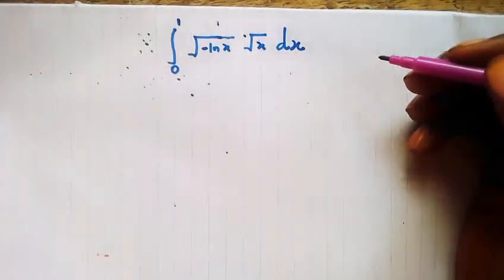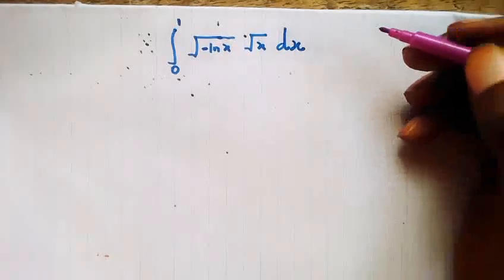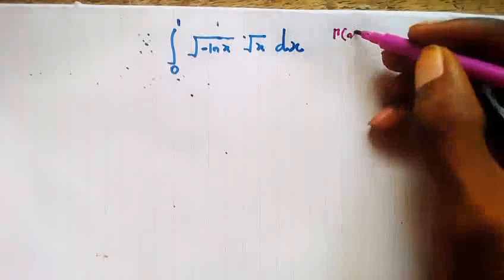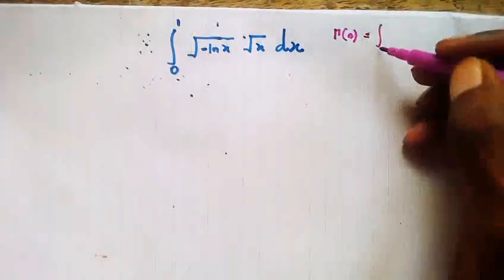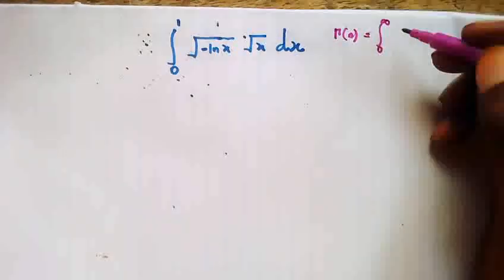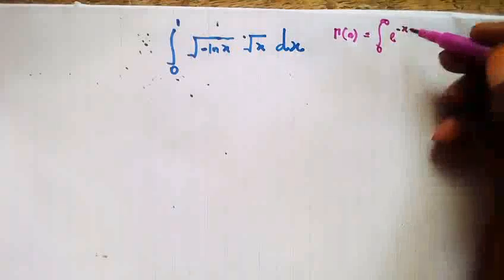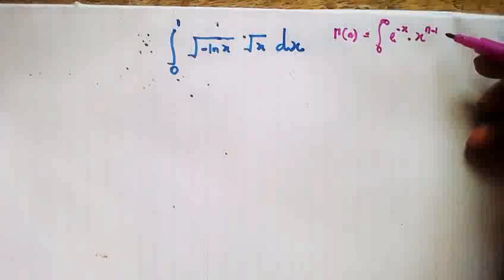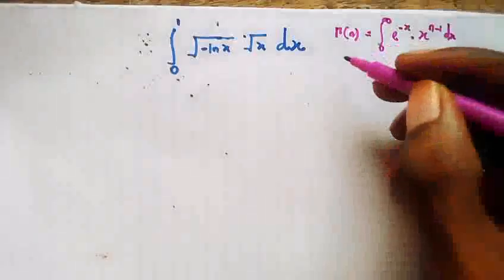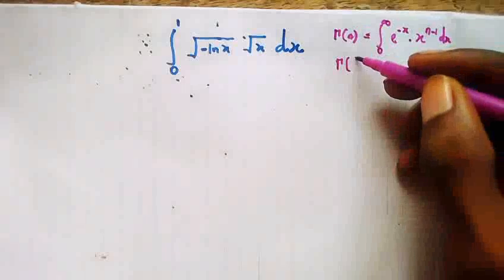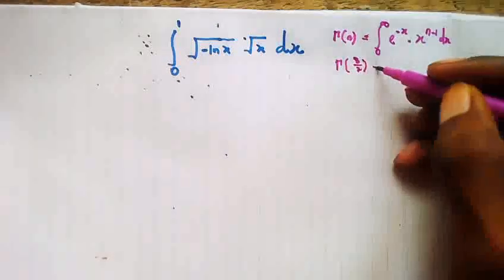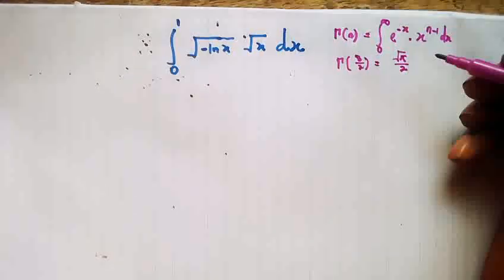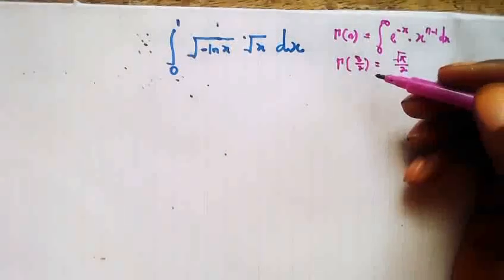Before we start, let us take note that the gamma of n is equal to the integral as x goes from 0 to infinity of e raised by negative x times x raised by n minus 1, dx. We also need to know, as solved in the previous video, that gamma of 3/2 is equal to the square root of pi all over 2.